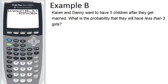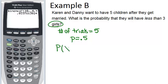The number of trials is 5 because they are going to have 5 children. The probability of success, which is in this case having a girl, would be 0.5. We can assume there is an equal chance of having a girl and a boy. And we want to know the probability that they will have less than 3 which means 0, 1, or 2. We're not including 3 because less than 3 means less than 3. So we want the probability that the number of girls is less than or equal to 2.